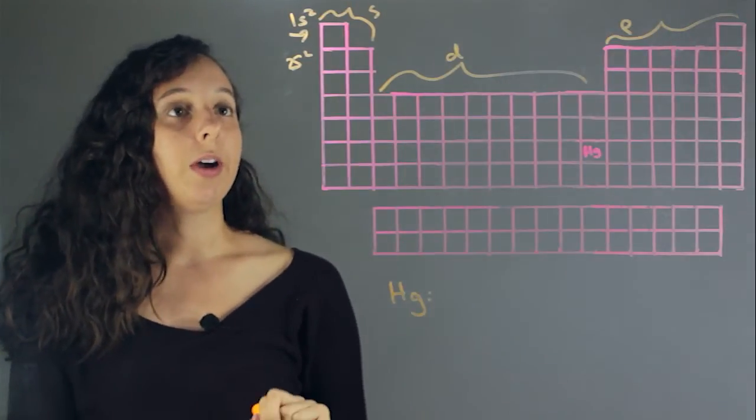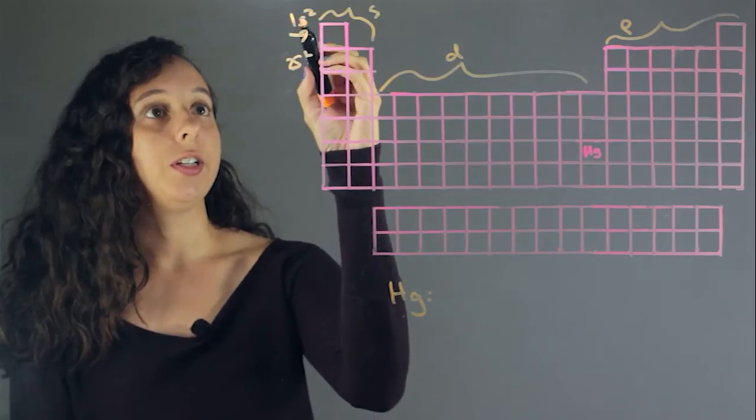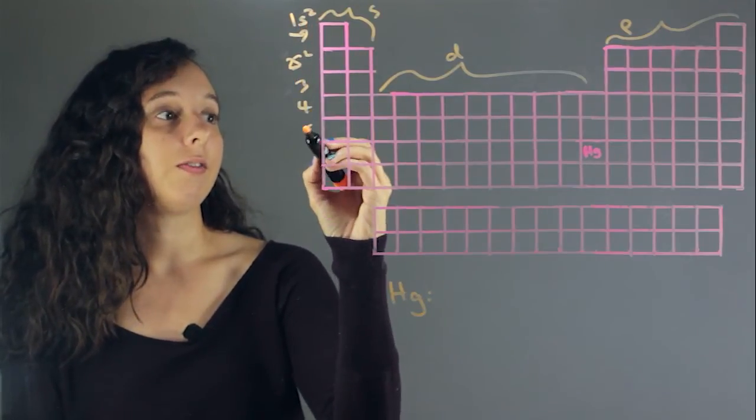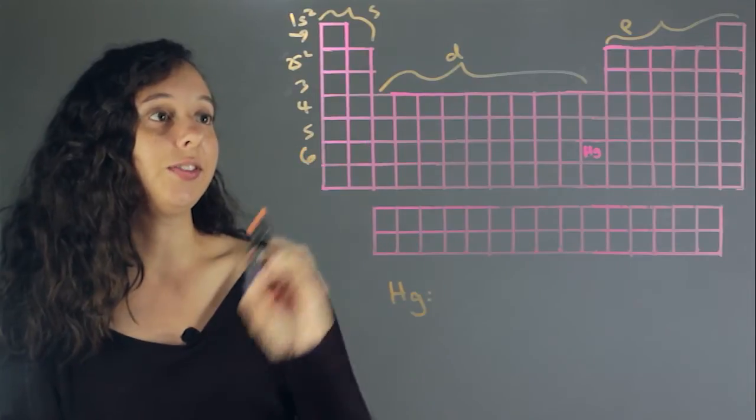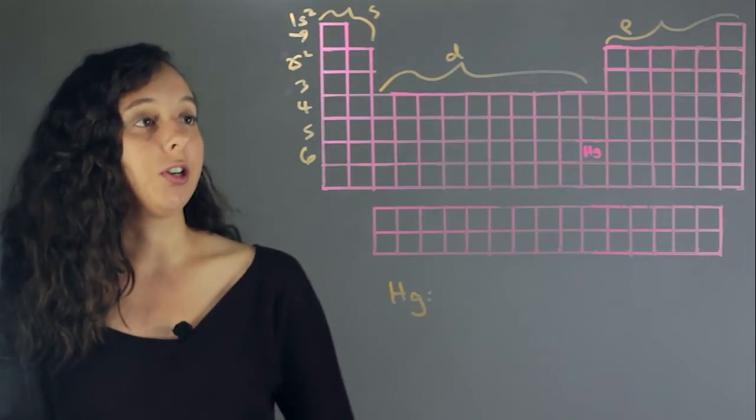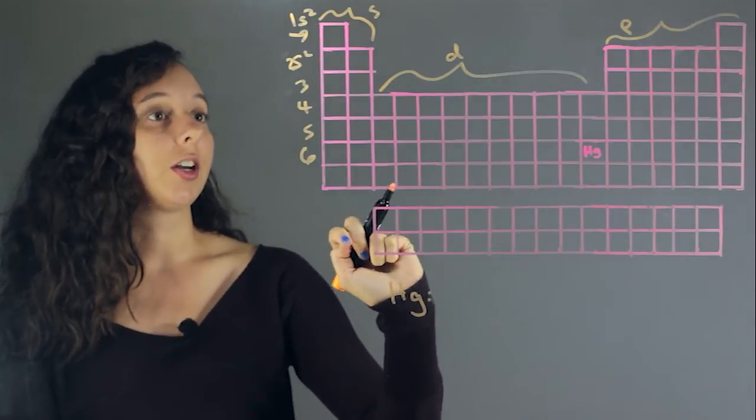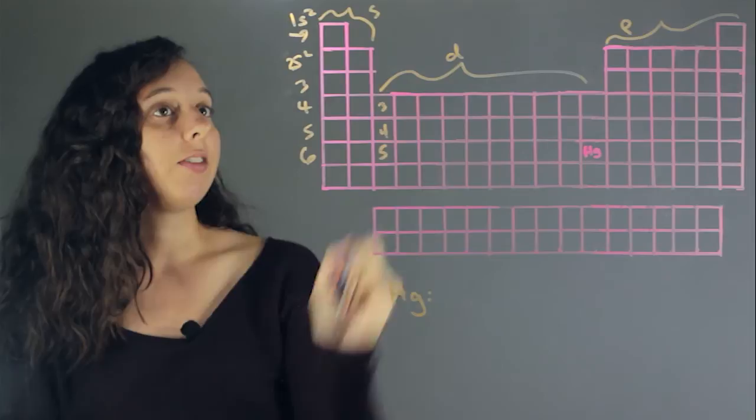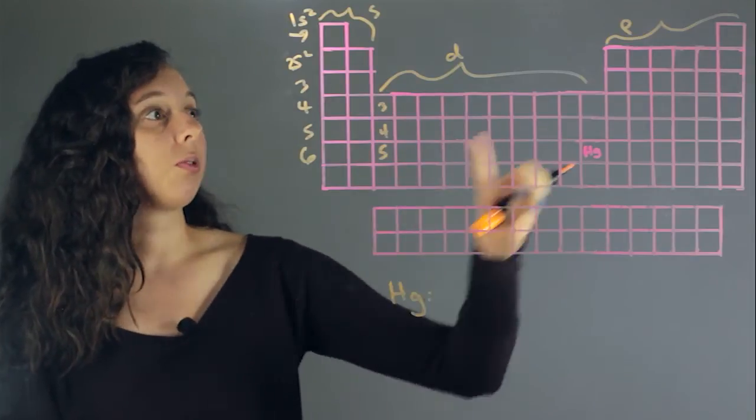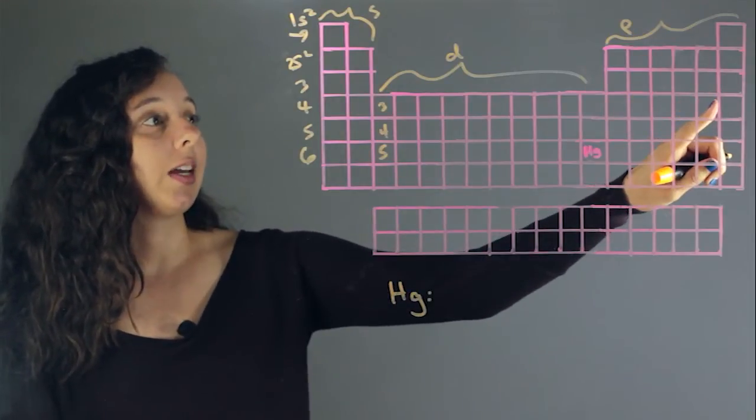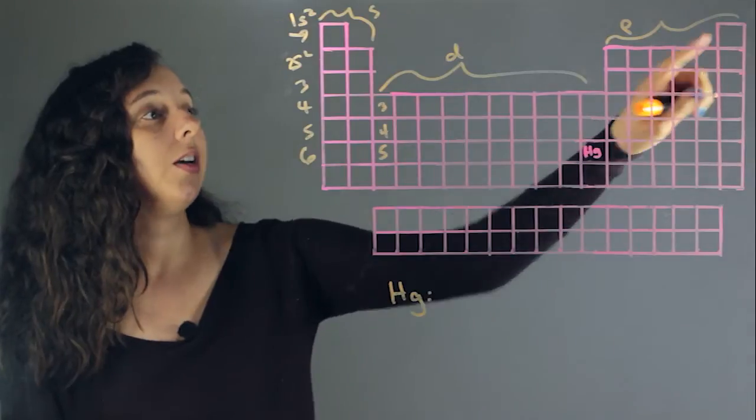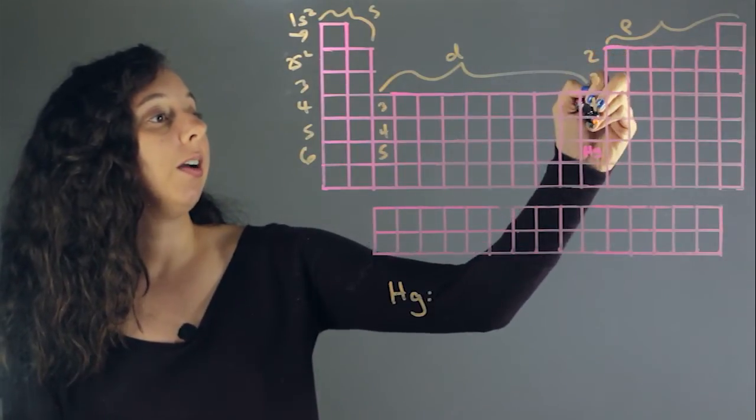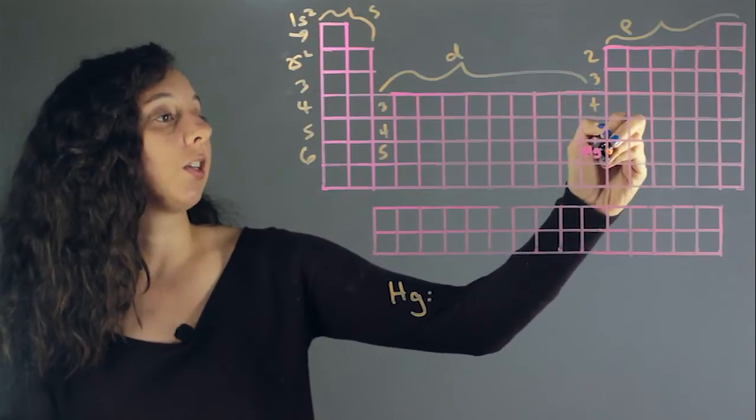So it pretty much just increases with number 1, 2, 3, 4, 5, 6 for the s, and d actually starts at 3. So this first d block is going to go ahead and it's going to be 3d, 4, 5. And p follows the same rules as s, except it skips this first one. So this starts with 2p, 3p, 4p, 5p, and then down here, this is going to be 6p.